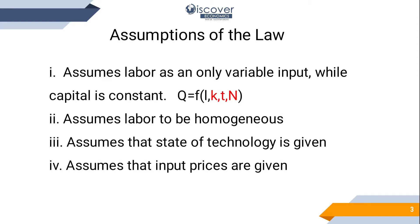Before coming to the law of diminishing returns we need to understand its assumptions. The first assumption is that quantity is a function of labor, capital, technology, and natural resources. But here we are going to take only labor as a variable and the rest of the factors would be considered as constants.